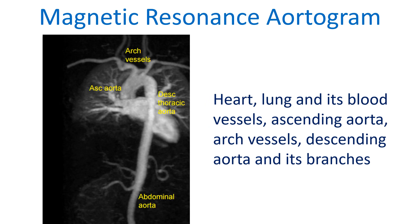This image shows the heart, lungs and their blood vessels, ascending aorta, arch vessels, descending aorta and its branches. Major visceral branches arise from the descending aorta.